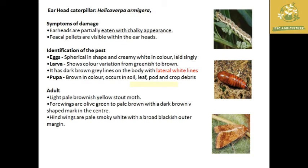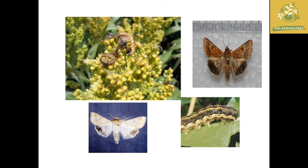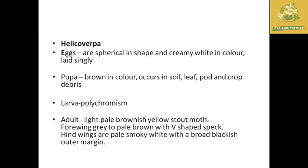The adult is a light pale brownish yellow stout moth with olive green to plain color on the forewings, with a center mark on the forewings. The hind wings are smoky white with a blackish outer margin. Images of larvae and adults in the crop and reared specimens are provided.